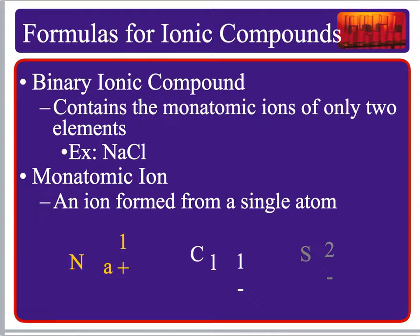Now we're going to get into the nitty gritty and talk about how to write formulas for ionic compounds. There are two types: binary — meaning it has two elements — and monatomic ions, where mono means one. Sodium with a 1+ charge would be a monatomic ion, but when it bonds with chlorine, it becomes a binary ionic compound.